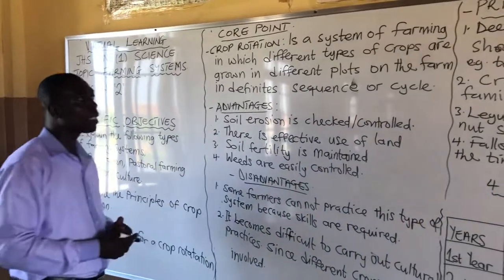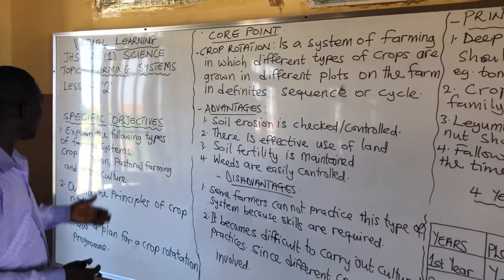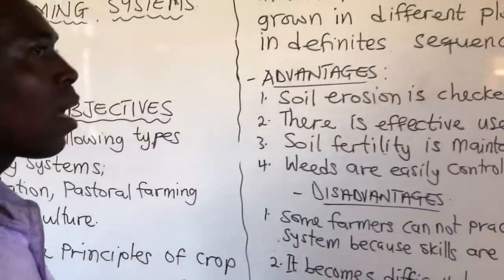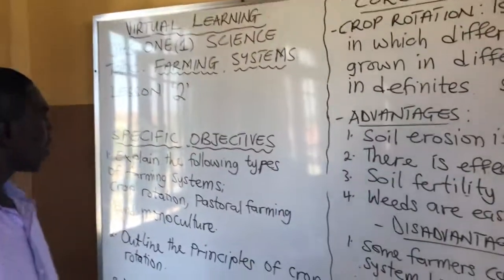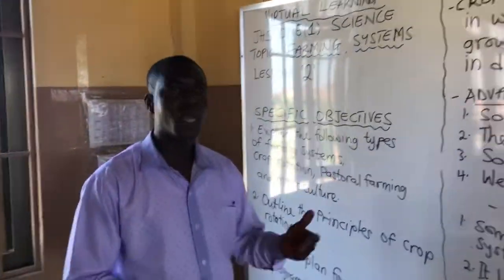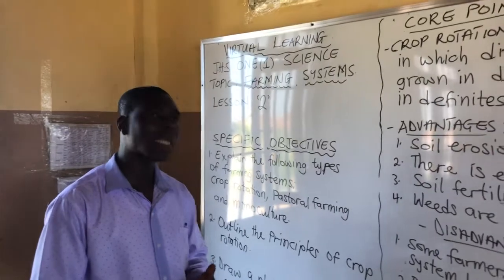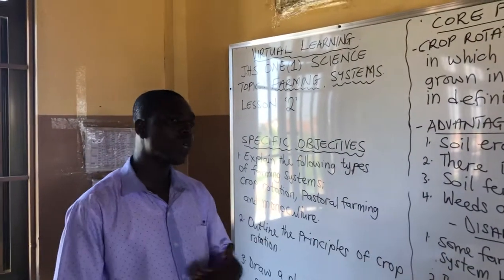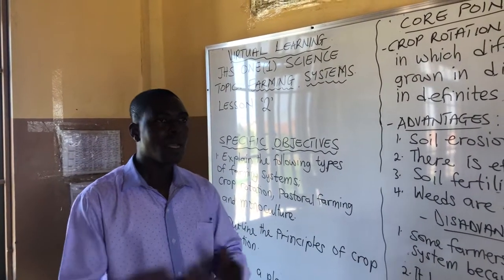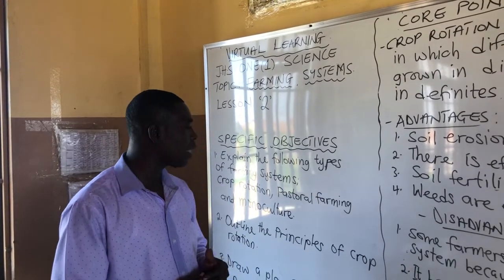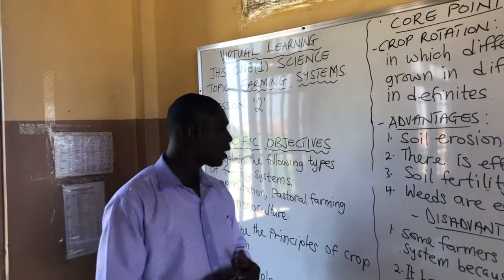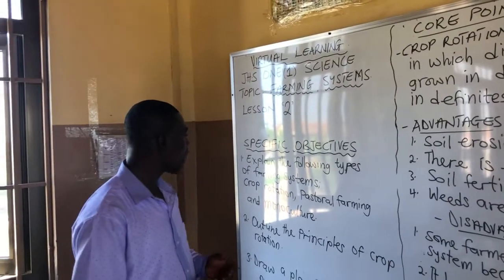Now before we move on to the principles of crop rotation, let me quickly explain pastoral farming. Pastoral farming is a system of farming in which a farmer keeps or rears animals such as cattle and moves them from place to place in search of food, especially during the dry season. This system is mostly practiced in the northern part of the country. That is pastoral farming.